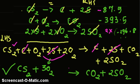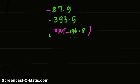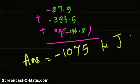Now for the enthalpy change: since we have summed up all three equations, we also sum up all the enthalpy values. Rewriting neatly, we get −87.9, then −393.5, and then 2 × (−296.8). Summing all of these gives the final answer. Thank you.